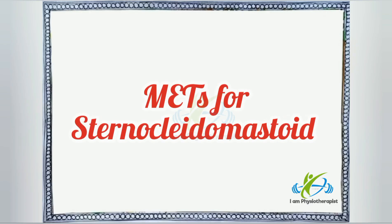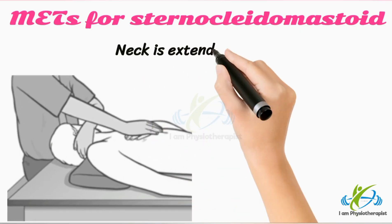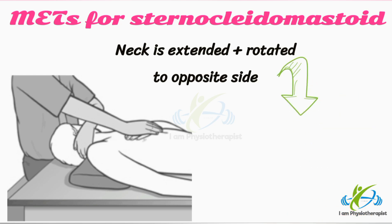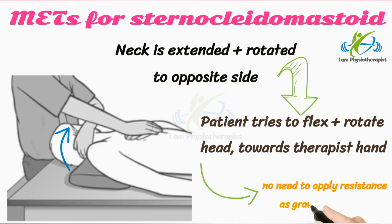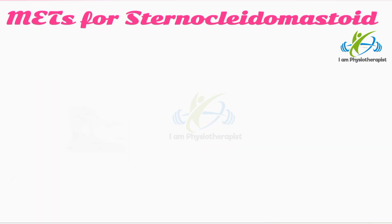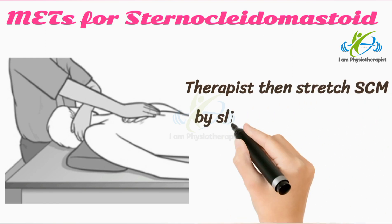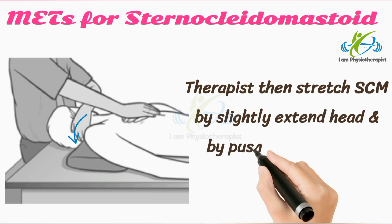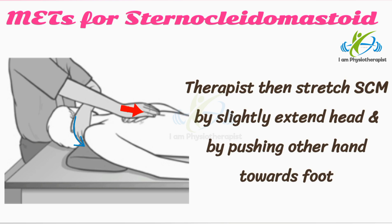Muscle energy technique for the sternocleidomastoid muscle: the patient's neck is extended and rotated away from the affected side. The patient is then asked to flex the fully rotated head a small degree towards the ceiling and hold their breath. When the head is raised, there is no need for the practitioner to apply resistance, as gravity provides enough resistance. After isometric contraction, the patient slowly releases the effort and exhales. The therapist then stretches the muscle by slightly extending the head and pushing the other hand towards the foot for 10 seconds.